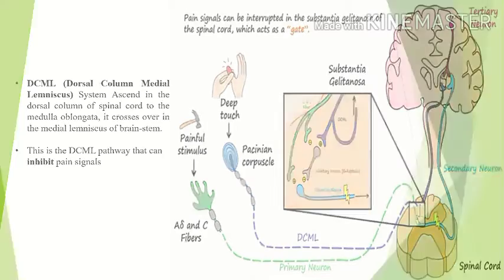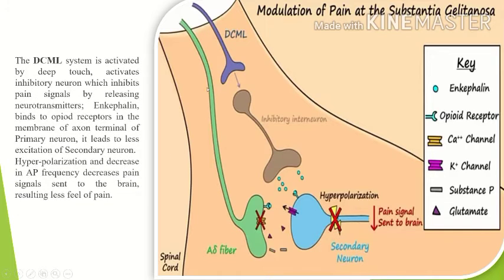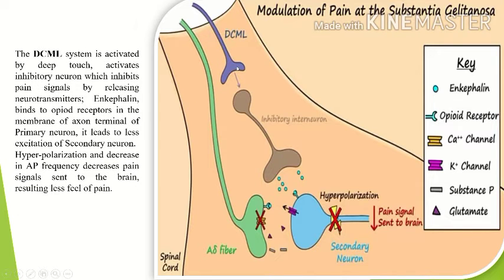Let's have a closer look at the substantia gelatinosa of the spinal cord. When the DCML is activated by deep touch, it activates an inhibitory neuron, which inhibits pain signals by releasing inhibitory neurotransmitters like enkephalin. Enkephalin binds to opioid receptors in the membrane of the axon terminal, causing closure of calcium channels, leading to less release of excitatory neurotransmitters like substance P and glutamate from the axon terminal of the primary neuron.